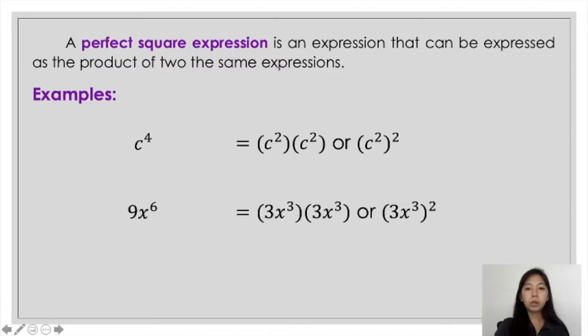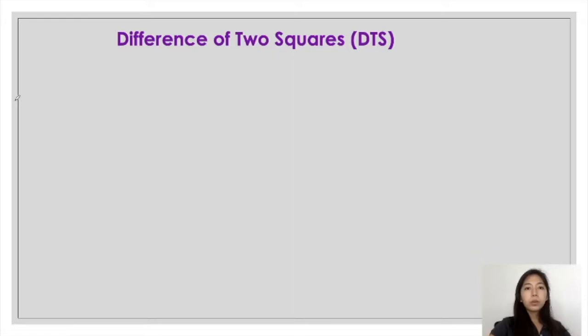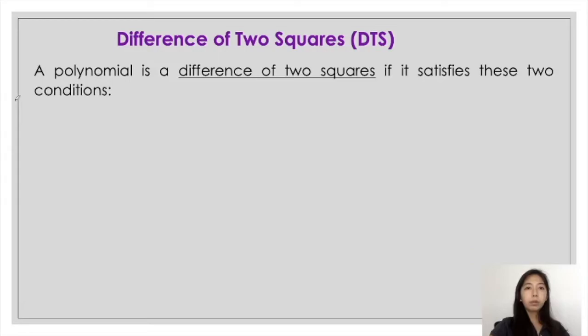It can also be in terms of quantity. For example, the square of (m minus 2n) can be expressed as the quantity of (m minus 2n) times the quantity of (m minus 2n).